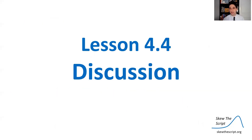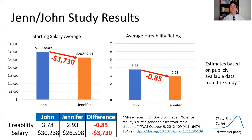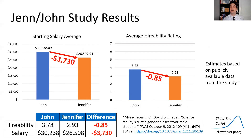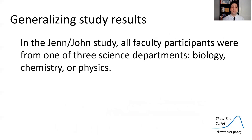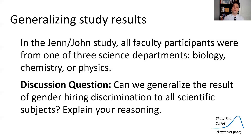Finally, let's talk about generalizing study results. In the John-Jennifer study, Jennifer's application materials on average received lower starting salary estimates and lower higher ability ratings, and these were statistically significant. Generalization is the process of using study results to make inferences about a larger population. In the John-Jennifer study, all faculty participants were from only three types of science departments: biology, chemistry, or physics. So the discussion question is: can we generalize this result of gender hiring discrimination to all scientific disciplines? Why or why not? That's it for today, statisticians — have a good one.